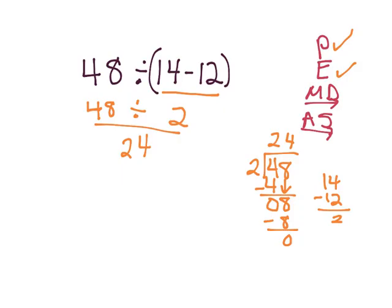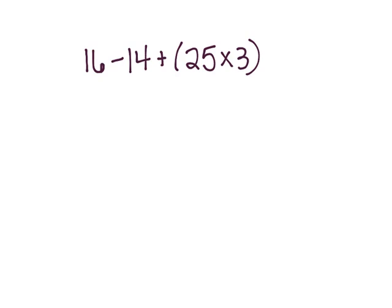Let's do a harder problem. This says 16 minus 14 plus (25 times 3). The first thing I'm going to do is write my PEMDAS. First, do I have any parentheses? Yes — it's 25 times 3. I know 25 times 3 is 75.